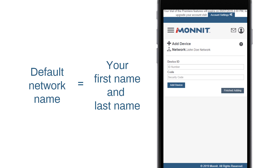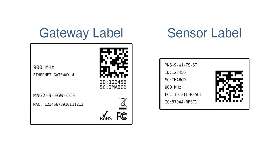This page is where you will enter your device ID and security code from your gateway in the corresponding text boxes. You also have the option of registering your device with its QR code.